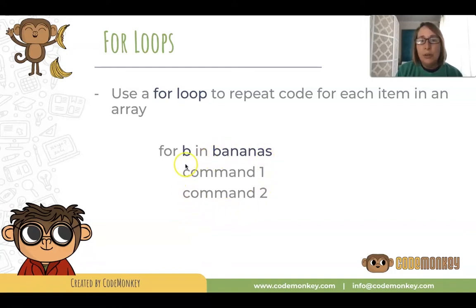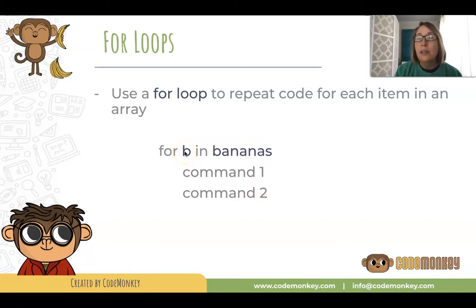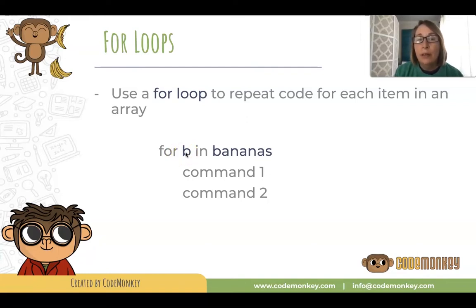So it's going to loop 10 times. And each time this variable b will hold a given banana. So the first time through, b is going to be the banana with index 0. The second time, it will be the banana in bananas with index 1. And so on, all the way through all the bananas.